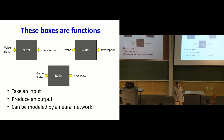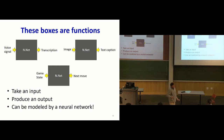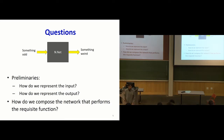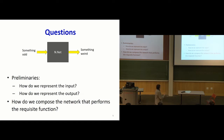In various tasks like speech recognition, image transcription, or playing games, something goes in and something comes out. Anything that does this is a function, and it can be modeled by a neural network. The question is: how do you represent the input and the output? A game state goes in, and a recommendation for a move comes out. These abstract concepts must be represented numerically for a function to operate on them, and then how do we compose the network that performs the requisite function?